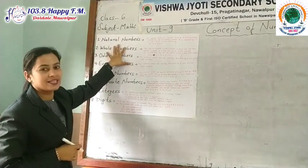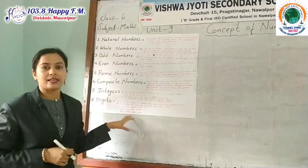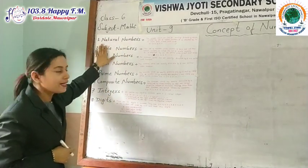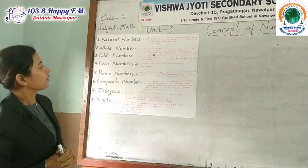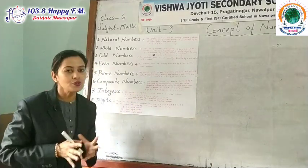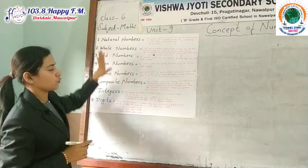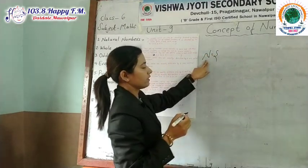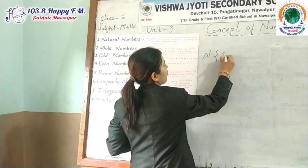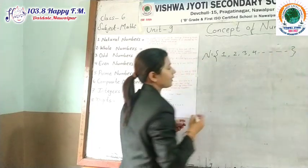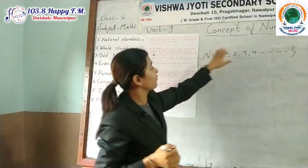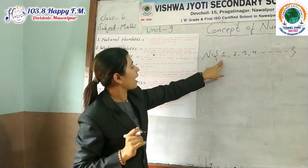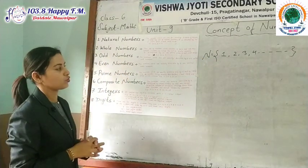I think grade 6 students, you have already learned these topics in class 5 as well. The first topic is natural numbers. Natural numbers are those numbers which we use for counting any objects. Natural numbers are denoted by the capital letter N and start from 1, 2, 3, 4 and so on. That means they never end — the natural numbers are infinite. The first and smallest natural number is 1.